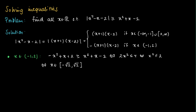That is one condition. But recall that x should be in the open interval minus 1, 2. So we should further restrict the interval minus square root of 2, square root of 2 to the open interval minus 1, square root of 2, where square root of 2 is included.